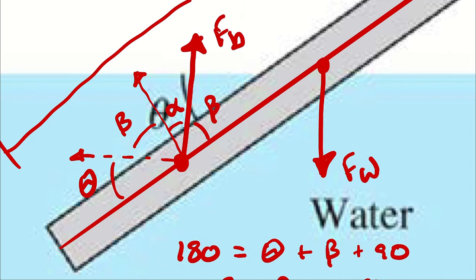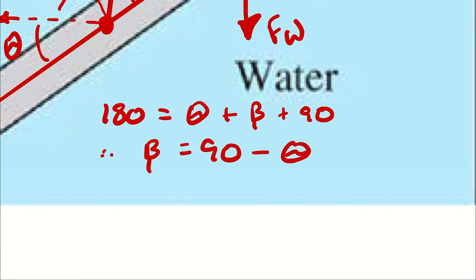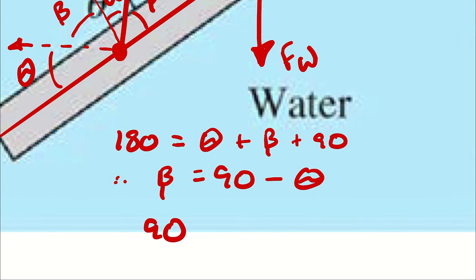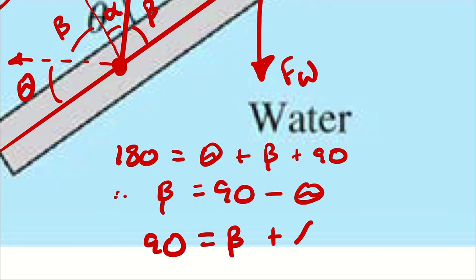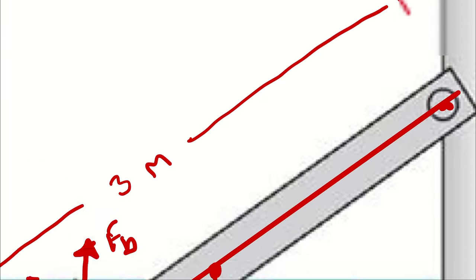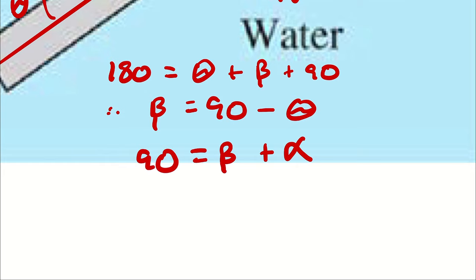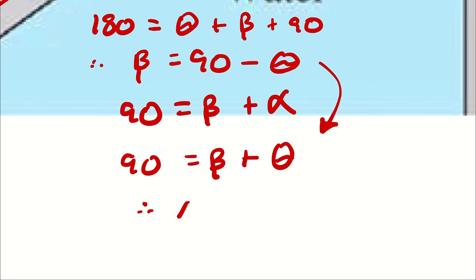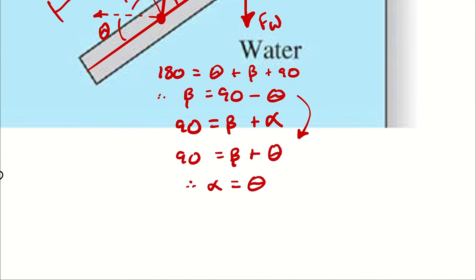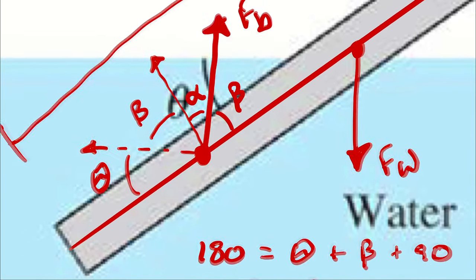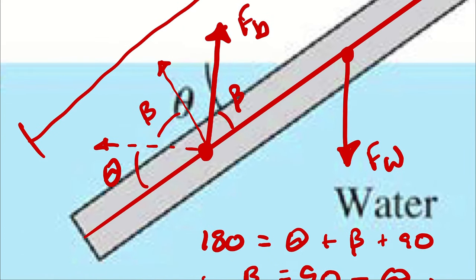Because I know up is perpendicular to horizontal, that means that 90 must equal beta plus alpha. And I can say here that 90 is also equal to beta plus theta. Therefore, alpha is equal to theta. All of that just to point out that this inside angle is also theta.